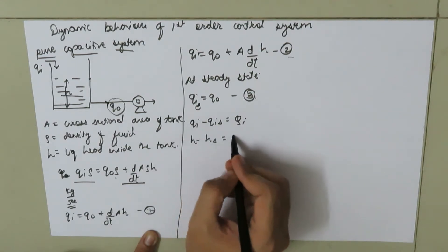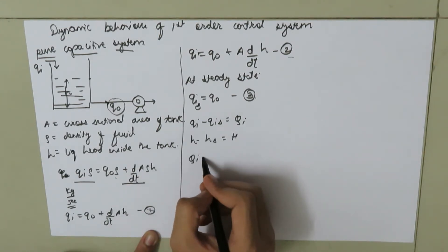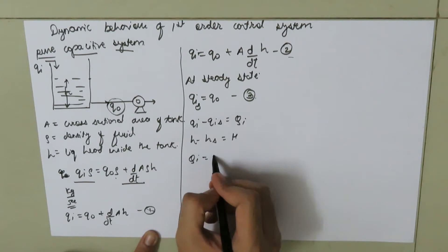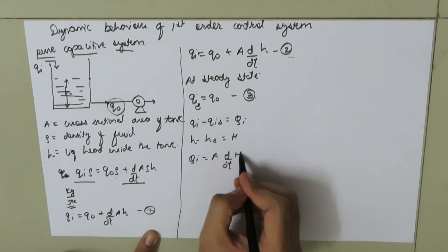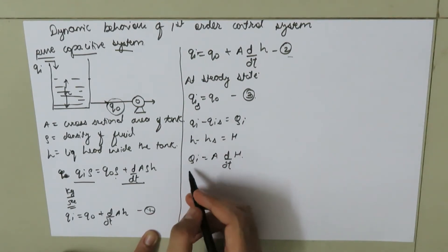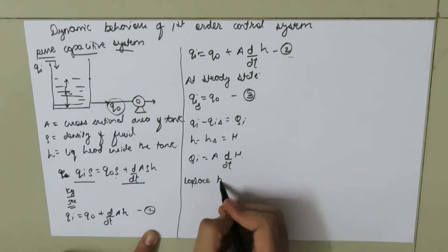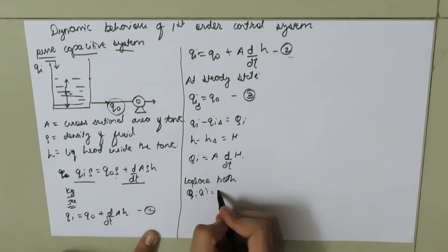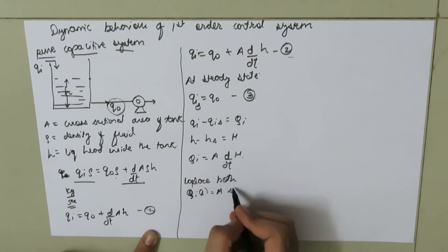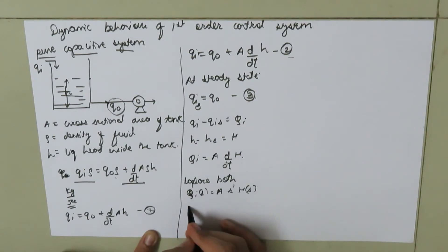So we can write this equation as capital Qi equals A times d(capital H)/dt. Taking the Laplace transform on both sides, we get Qi(s) equals A times s times H(s).